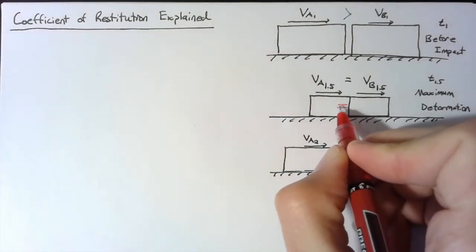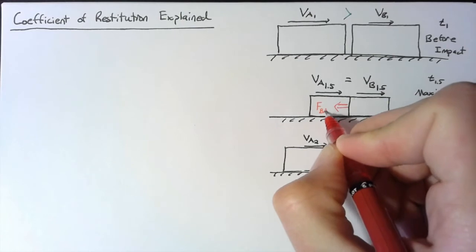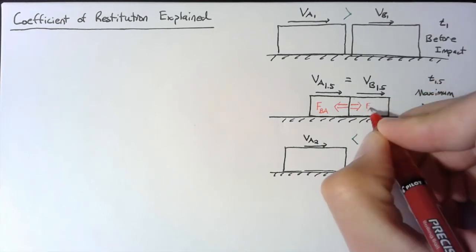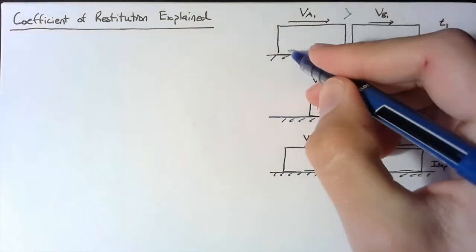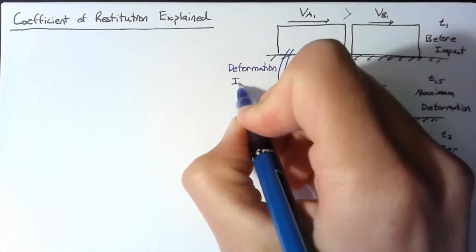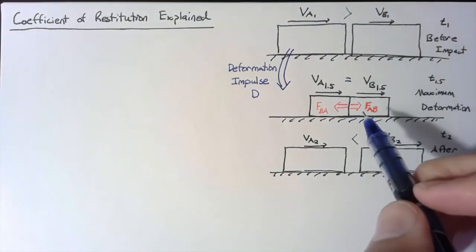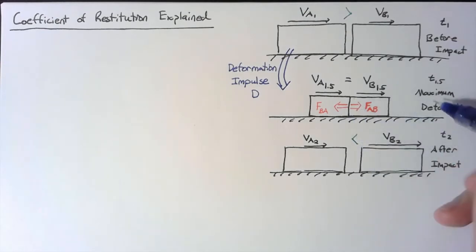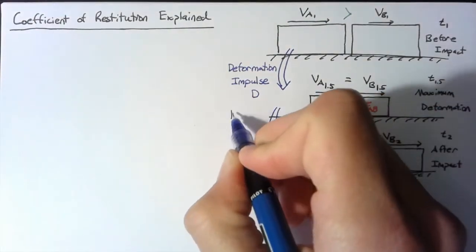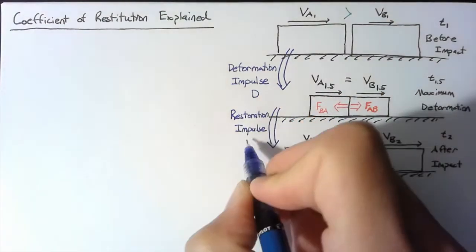There's going to be some force that B imparts on A — the force of B acting on A — and likewise a force that A imparts on B. From the instant these two blocks touch to the point of maximum deformation, we call the impulse of these forces the deformation impulse, shorthand impulse D. There's also additional impulse from the time of maximum deformation as the two blocks push apart, and we call that the restoration impulse — shorthand R — as the blocks are restored to their original shape.